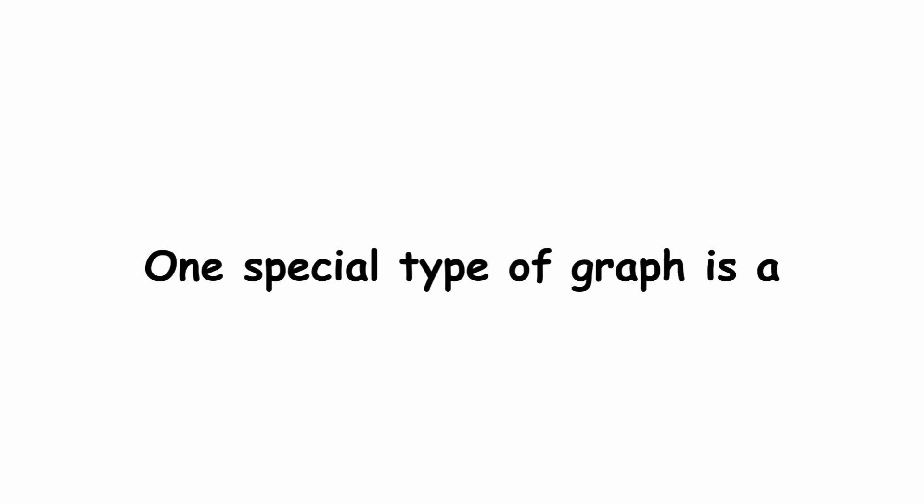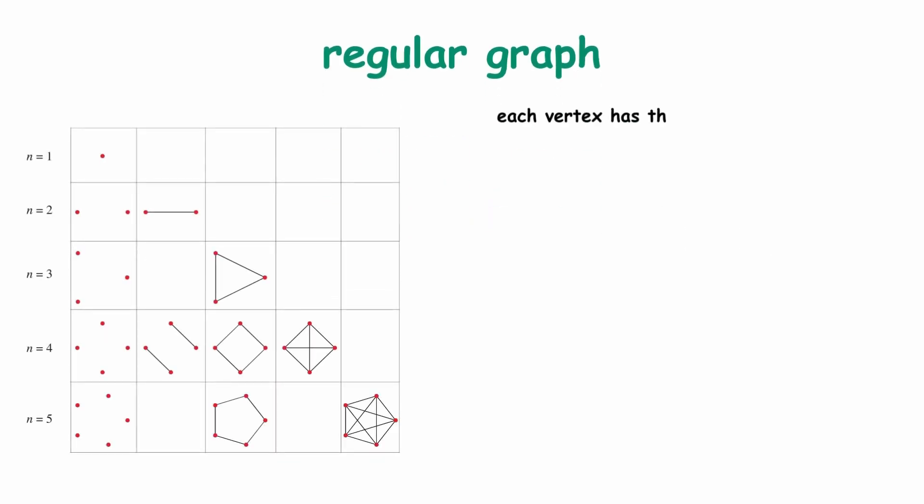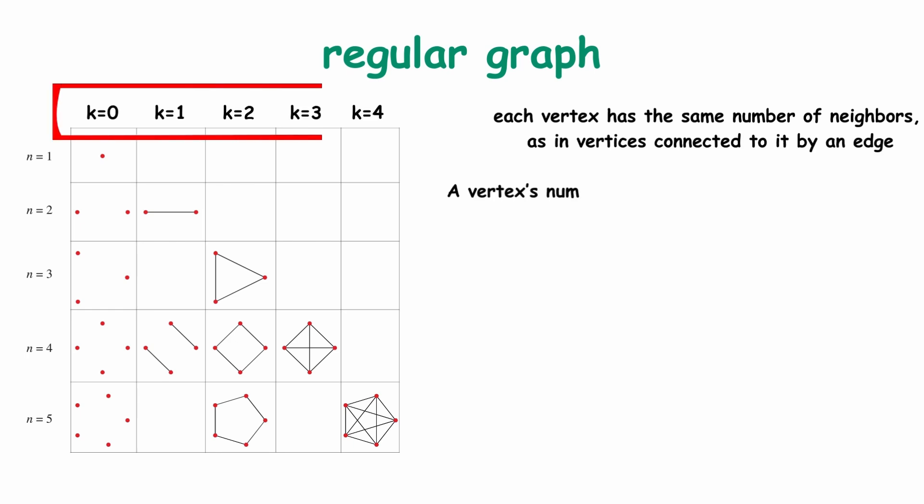One special type of graph is a regular graph, where each vertex has the same number of neighbors, as in vertices connected to it by an edge. A vertex's number of neighbors is called its degree. A graph where every vertex has degree k is called a k-regular graph.